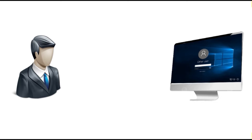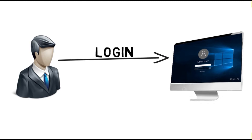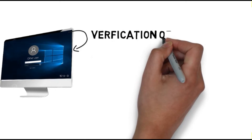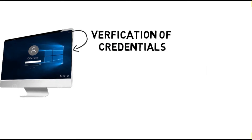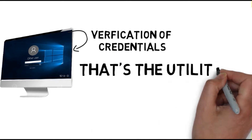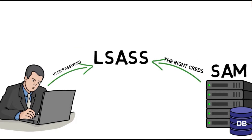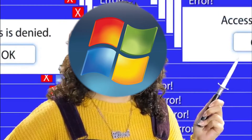What is the utility of the LSASS process? Imagine you are using your computer and decide to log into your user account. When you enter your username and password, the operating system needs to verify your credentials before granting you access. This is where the LSASS process comes into play. When you sign in, LSASS retrieves your entered credentials and compares them to the stored user account information in the Security Account Manager, the SAM database. LSASS will verify your credentials and then grant you access or return access denied.